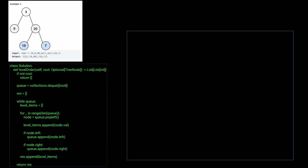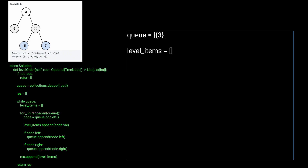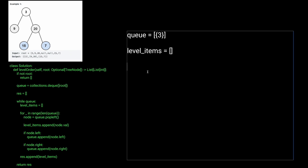The first part of our problem is checking that the root is not empty, so we can skip over that and go to the part where we define our queue and initialize it with our root. The queue is going to be storing node 3, which is our root. While we have a queue — which we do because the queue is not empty — our current level_items is going to be an empty list. For blank in range(len(queue)): the length of the queue is one, so we're going to iterate one time only. We pop from the left of the queue, and our current node is going to be node 3.